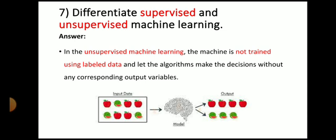Now, unsupervised learning. In unsupervised machine learning, the machine is not trained using labeled data, and let the algorithm make the decision without any corresponding output variable. Here you can see, this is the input data that is given in form of pictures. There are pictures of apples and watermelons, and that data is not the labeled data. Whereas the system is giving output, it has differentiated apples and watermelons. This is known as unsupervised machine learning.